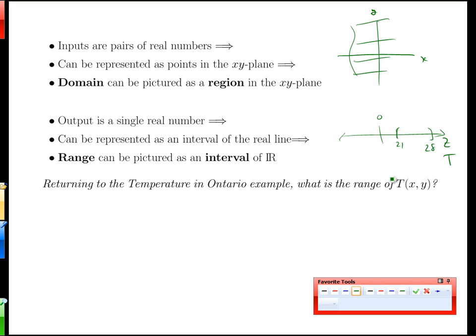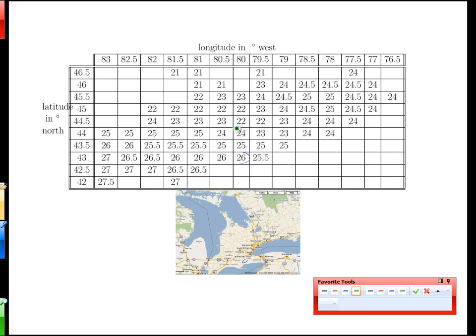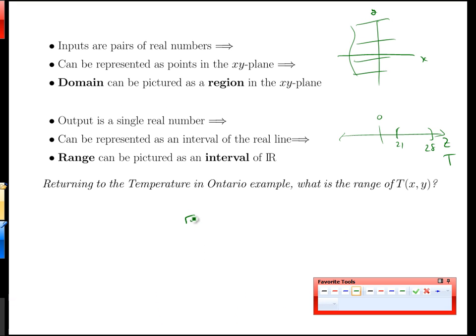In our particular case from the example, the range would be something like 21 to 27. If we take a careful look at that, we would look back at this function and say the lowest value I see is 21. The highest temperature would be 27.5. So the range would be T in the range 21 to 27.5 degrees.